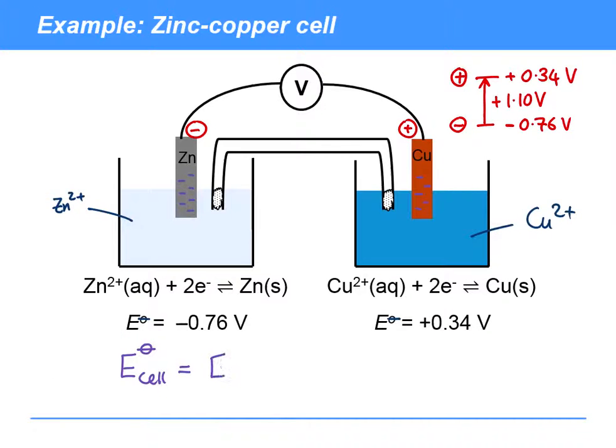we need to do the positive standard electrode potential to subtract the negative standard electrode potential, which in this case is 0.34 minus minus 0.76, which is 1.1 volts.